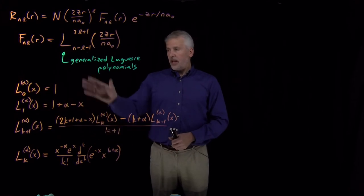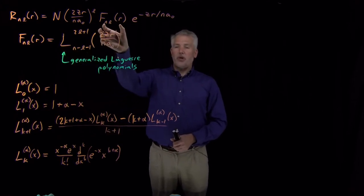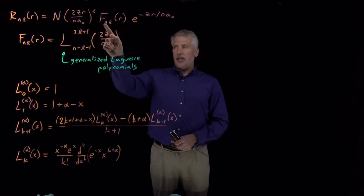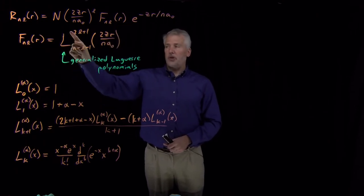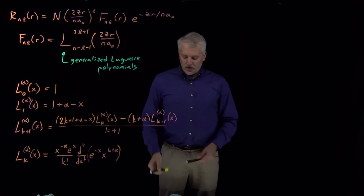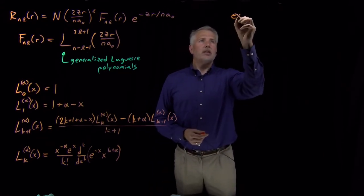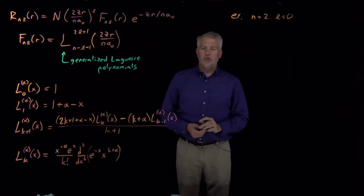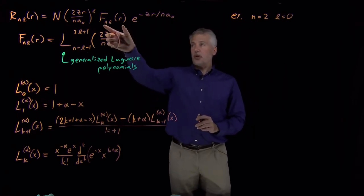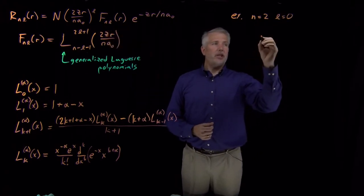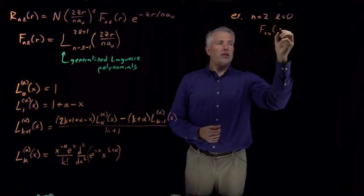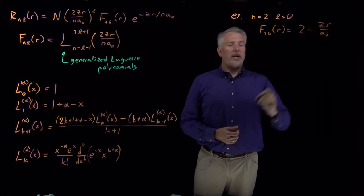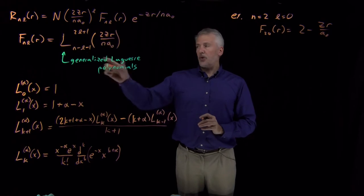These functions are useful because if I want to know what the polynomial piece of the radial wave function looks like, I need to look up or calculate the f_{n,l} function, which is related to one of these generalized Laguerre polynomials. To see how that works, let's do some cases we've seen already. Previously we've seen that the polynomial portion of the n equals 2, l equals 0 wave function has the form 2 minus zr over a-naught.